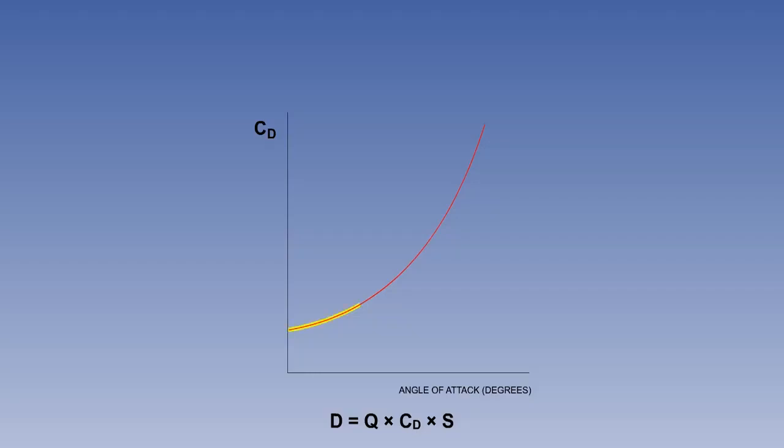At low alphas, CD is low, and changes of alpha produce only small changes in CD. At higher alphas, however, the CD increase is exponential.